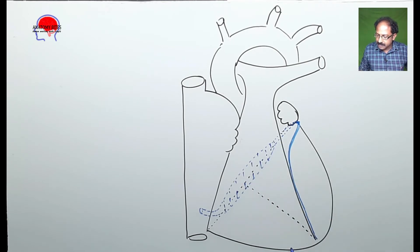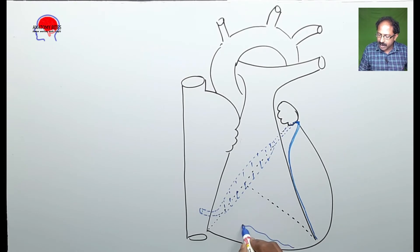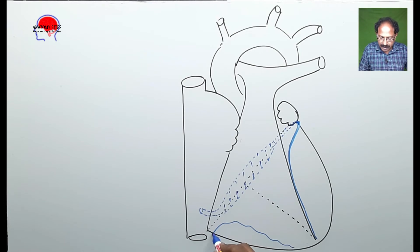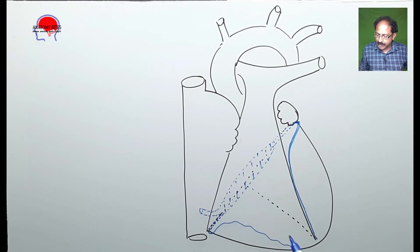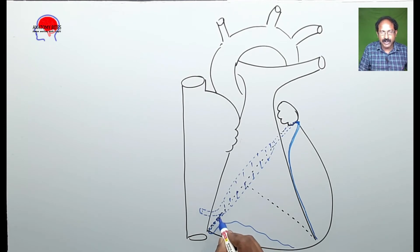There is another tributary which is running along the right marginal artery. From there it turns to the inferior border, then turns to the posterior coronary sulcus, and ends in the right end of the coronary sinus. This is another tributary of the coronary sinus.